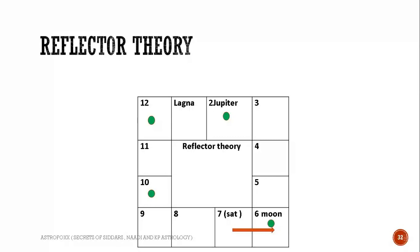There are three conditions where this reflector theory may not work or will not work. One thing is: for Saturn in 12, there should not be Rahu and Ketu. The other two, the second and third conditions, are slightly complex.